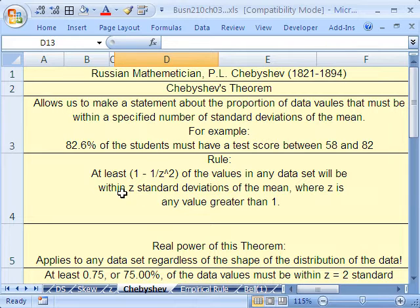Here's the rule. At least, and this is our formula, 1 minus 1 divided by z, the number of standard deviations squared. So whatever that is there, we'll say at least this proportion of values in any data set will be within z standard deviations of the mean, where z is any value greater than 1.